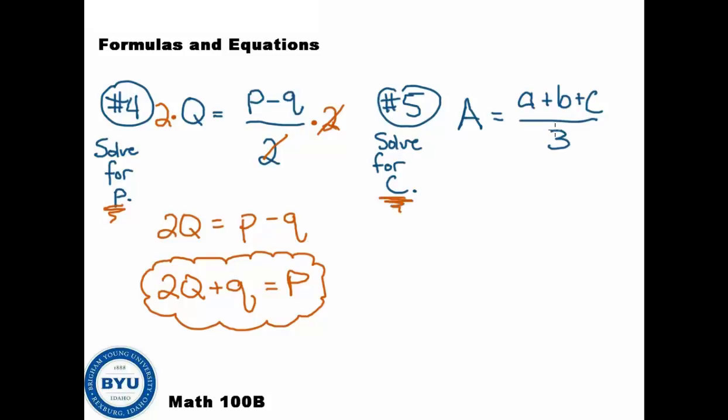Okay, on number 5, you have to solve for c. We need to get c by itself, so we've got to undo this fraction. Undo the divide by 3. The opposite of divide by 3, of course, is multiply by 3. So we get 3a equals a plus b plus c. We then need to get the plus a and the plus b over to the other side, so we subtract. And we get 3a minus little a minus b equals c.